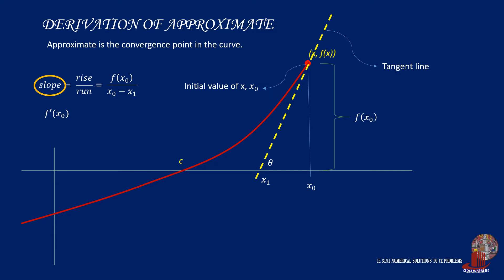Thus, f' of x0 is equal to the rise of the function of x0 all over x0 minus x sub 1. By manipulating the terms, we would get x sub 1 is equal to x0 less function of x0 all over f' of x0, which can then be the formula used to find the value of the succeeding values of x.